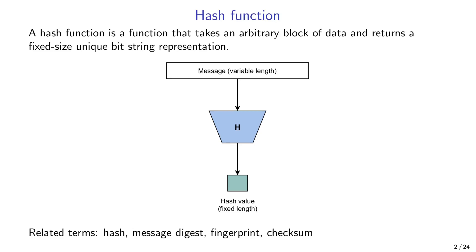At this point you should become suspicious and ask: how is it possible for the function to produce a unique representation of input data if the output domain is much smaller than the input domain, which is basically unlimited? Indeed, there is actually an infinite number of different input values that will produce the same hash value.